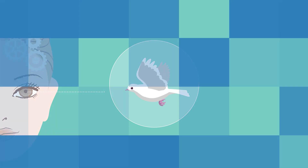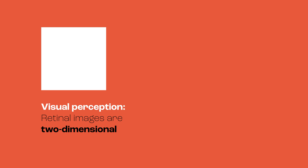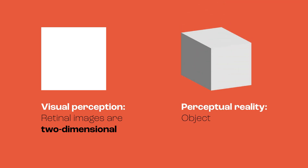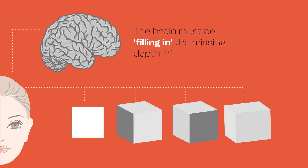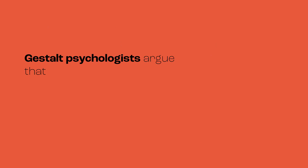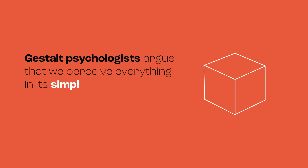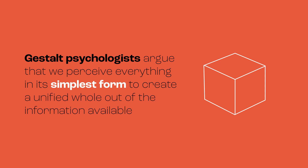In the early 20th century, Gestalt psychology took a different perspective, noting that in visual perception, retinal images are two-dimensional, whereas in physical and perceptual reality, objects are three-dimensional. It was proposed that somehow the brain must be filling in the missing depth information. Gestalt psychologists argue that we perceive everything in its simplest form to create a unified whole out of the information available.